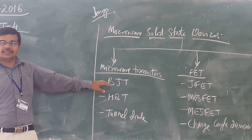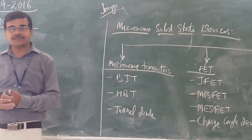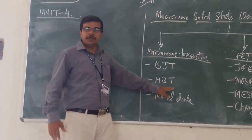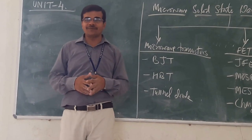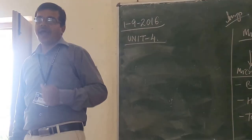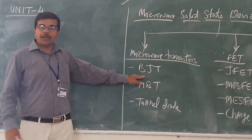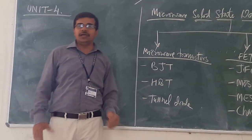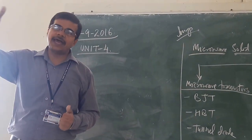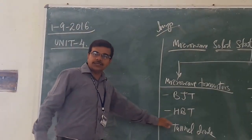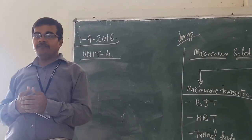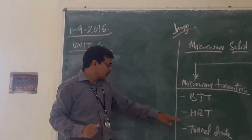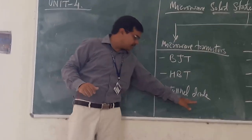For microwave transistors, you have the BJT, which stands for bipolar junction transistor. Under bipolar transistors, you also have the HBT, which stands for heterojunction bipolar transistor. A standard BJT is a homojunction device — using silicon-silicon or germanium-germanium. For heterojunction, you use two different materials such as germanium and gallium arsenide. You also have the tunnel diode in this category.